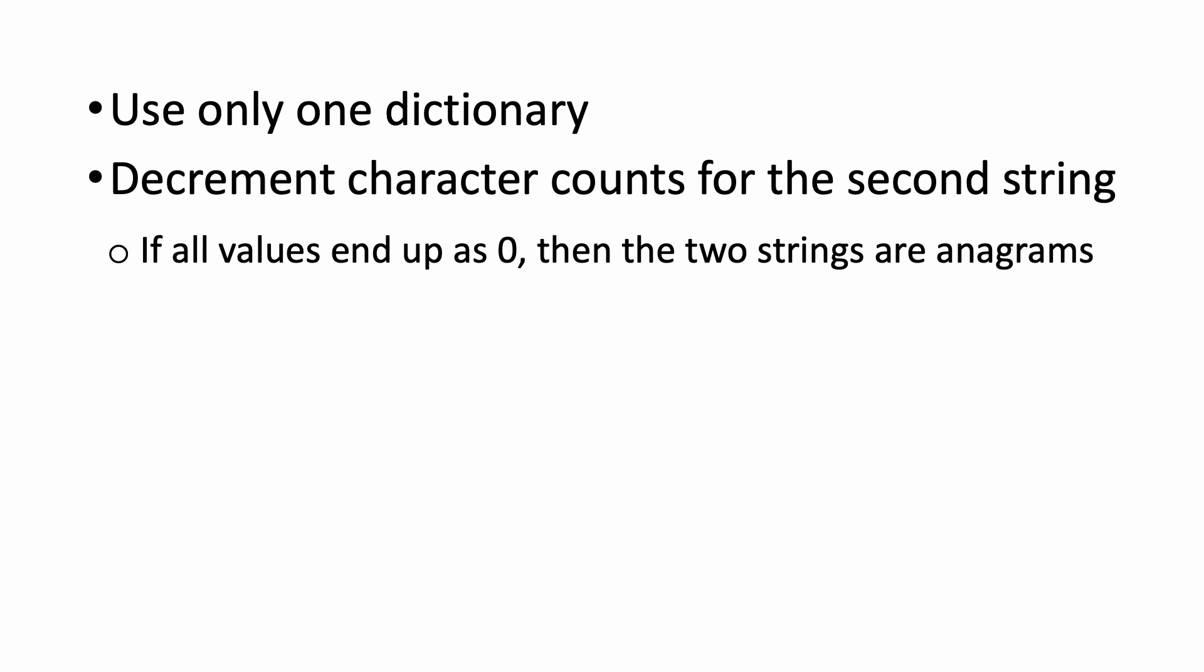You could even get rid of the dictionary completely and use an array instead. The character a would map to index zero, b would map to index one, and so on. This would allow you to avoid doing the hash calculations that are required when using hash tables, aka dictionaries. So I chose the method of using two dictionaries because I thought it was the most straightforward way, but if you're interested in solving this problem in a different way, I would encourage you to try to implement these solutions here as a challenge.